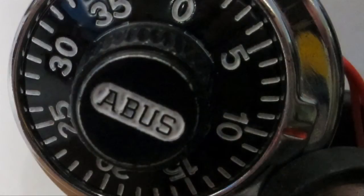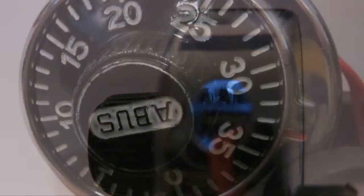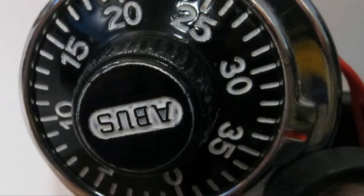And then we turn it clockwise again and we're lining up the next notch of the combination disc the same way. This one seems to be somewhere right between 33 and 34. Write that down.